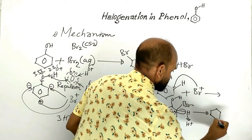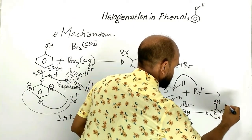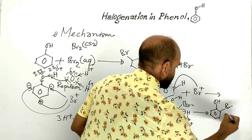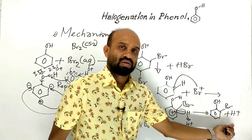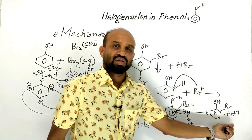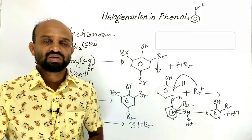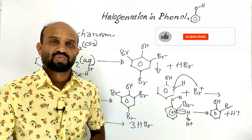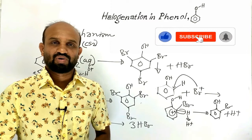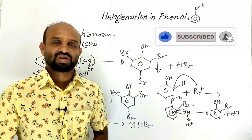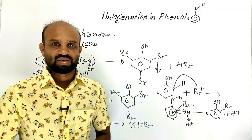So, we get the brominated phenol product and hydrogen as a cation (proton). This is the mechanism of bromination. This is all about halogenation in phenol. Thank you very much.